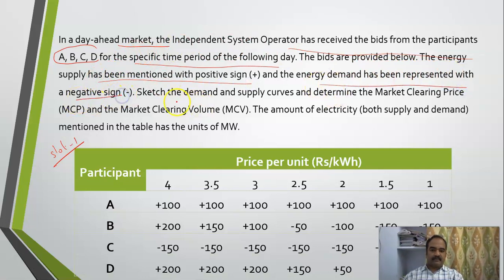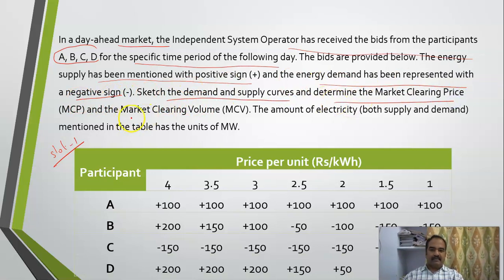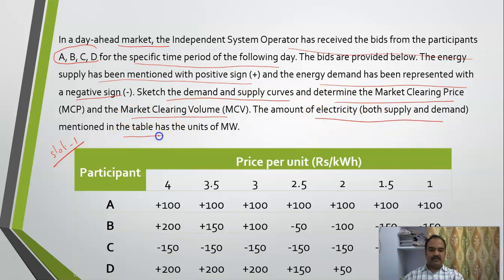What he is asking is: sketch the demand and supply curves and determine the market clearing price in the market clearing world. The amount of electricity — both supply and demand mentioned in the table — has the units of megawatts.